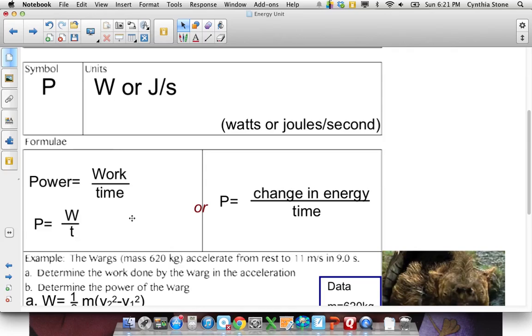So the formula is two different formulas, right? Work divided by time or W divided by T. Just making sure that the work is in joules and the time is in seconds. Or change in energy over time. Kind of the same because remember work is the change in energy. So depending on what you're given, if you're given energy, you'll use energy. If you're given work, you'll use work. Either way, they're always joules. That doesn't change the unit. And the time has to be in seconds.